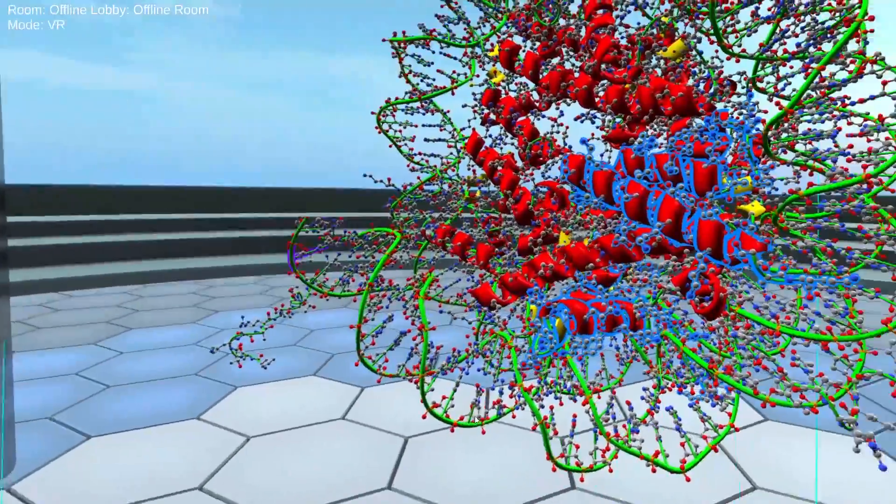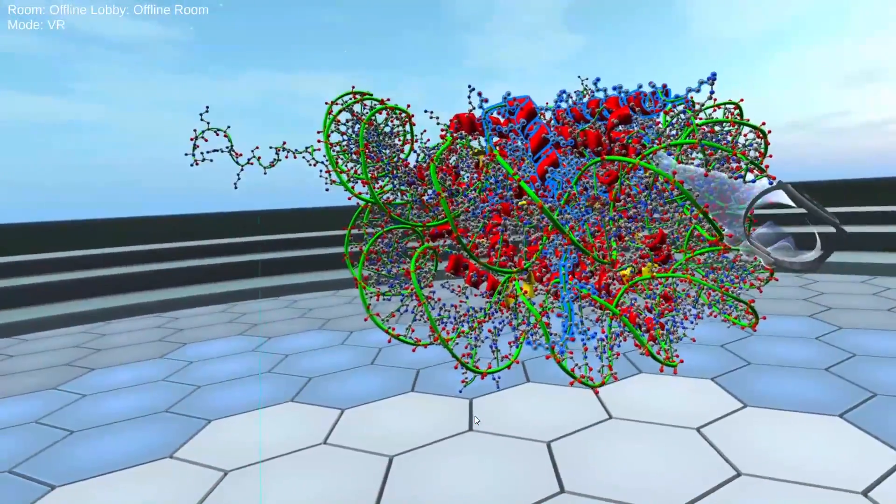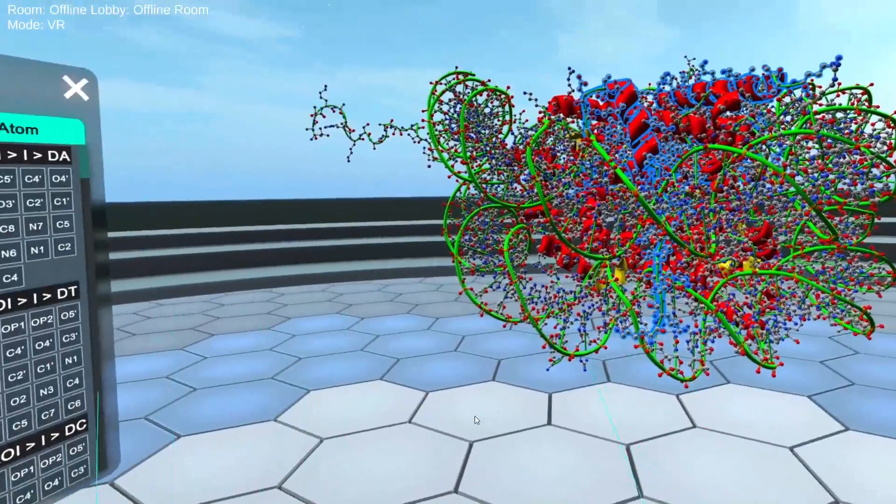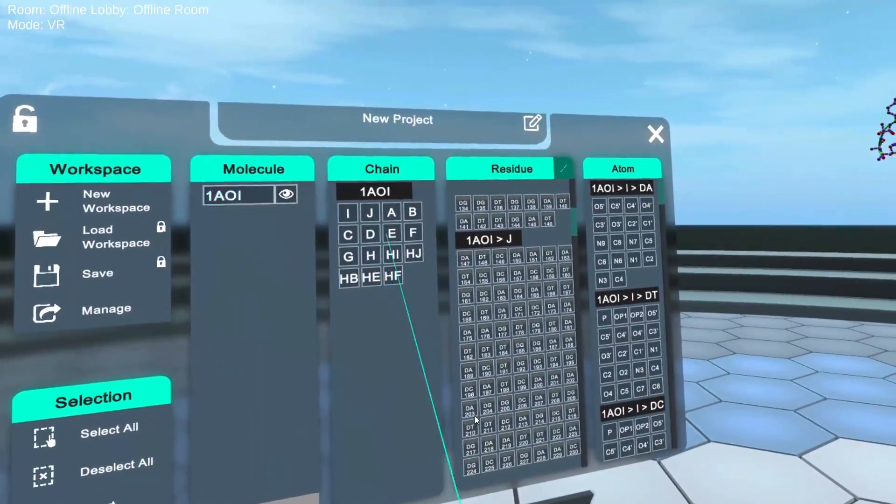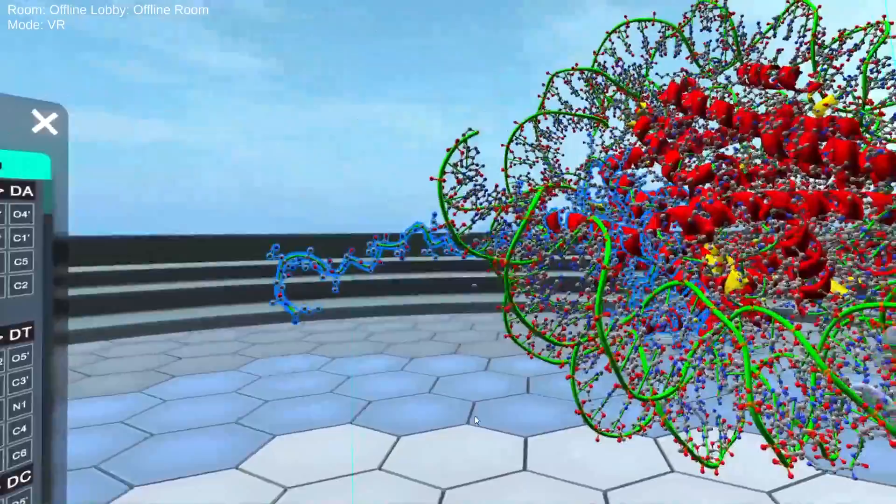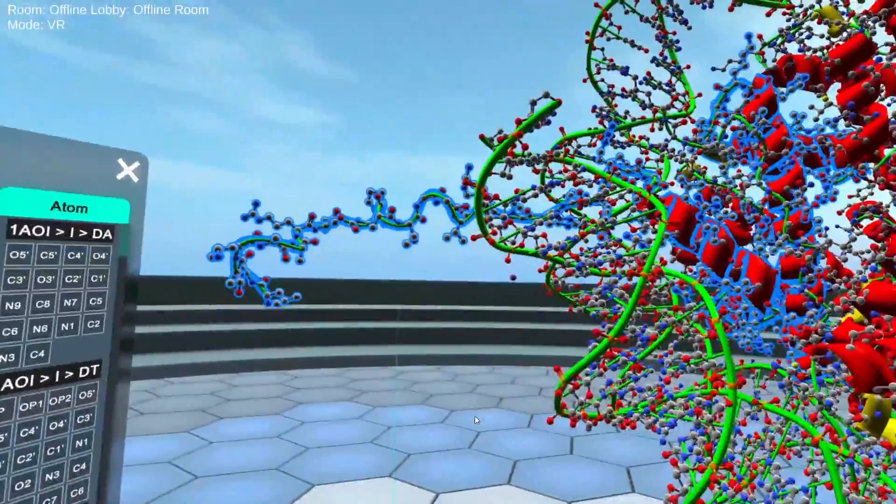And we can go ahead and look at these one at a time. All of these proteins do have three alpha helices. So those are the red ribbons that we're seeing. And so all of the histone proteins do have very similar structure.